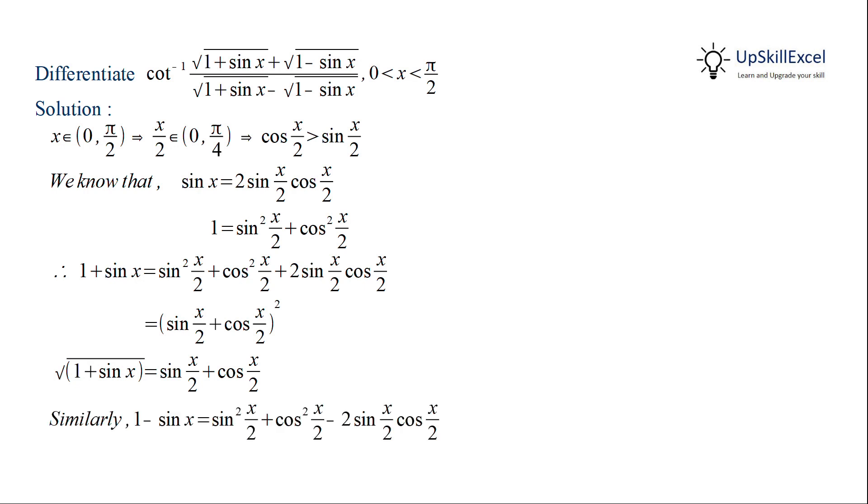Similarly, we can simplify 1 minus sin x, but we need to note here that cos x by 2 is greater than sin x by 2 in the given domain. Hence, under root of 1 minus sin x is equal to cos x by 2 minus sin x by 2.